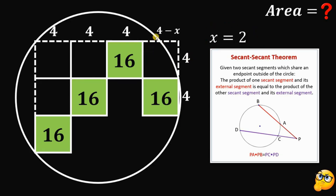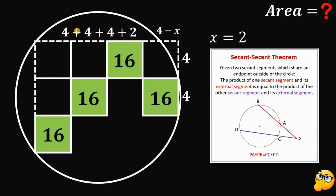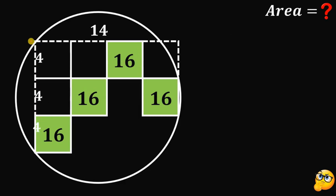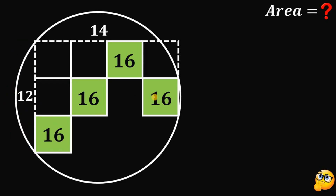We can now replace x with 2. The length of one chord of this circle is 4 plus 4 plus 4 plus 2, which equals 12 units. We also know this side length is 4, 4, and 4, so the length of the other chord is 4 plus 4 plus 4 plus 2, also equal to 12 units. Wait — let's connect this endpoint and this point. If we do that, we get a right triangle.